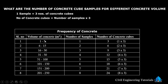So if the volume of concrete is between one and five cubic meters, you take one sample and three concrete cubes. Now, if the volume of concrete is between six and fifteen cubic meters, the number of samples you have to take is two. The number of concrete cubes for two samples is two multiplied by three, which equals six numbers of concrete cubes.